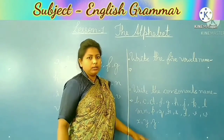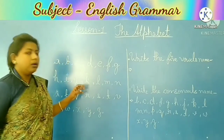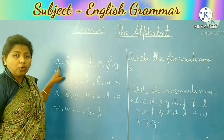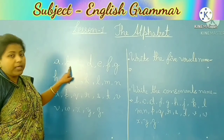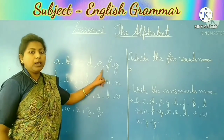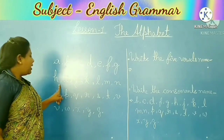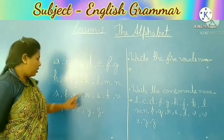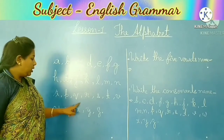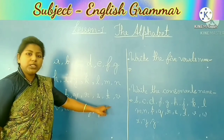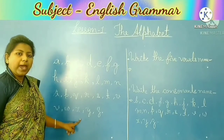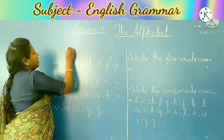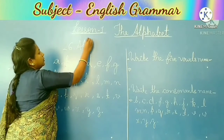This portion is your alphabet, and this portion is your question-answer. Now, all of you follow me: A, B, C, D, E, F, G, H, I, J, K, L, M, N, O, P, Q, R, S, T, U, V, W, X, Y, Z. This is the 26-letter alphabet.